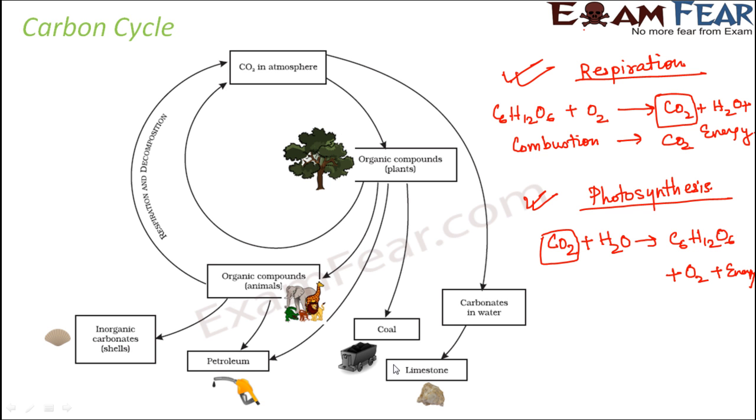Now let us look at this picture of carbon cycle because now we will be able to understand this picture better. So here you see, this is the carbon dioxide present in the atmosphere. This carbon dioxide is utilized by the plants during photosynthesis. Now some part of this carbon dioxide also combines with water to form carbonates, with water to form limestones. Now the carbon dioxide which is utilized by the plants, that's fine. But these plants will also undergo respiration. So as a result of respiration, what will happen? Carbon dioxide will be released back to the atmosphere. So when plants undergo respiration, carbon dioxide is released back to the atmosphere.